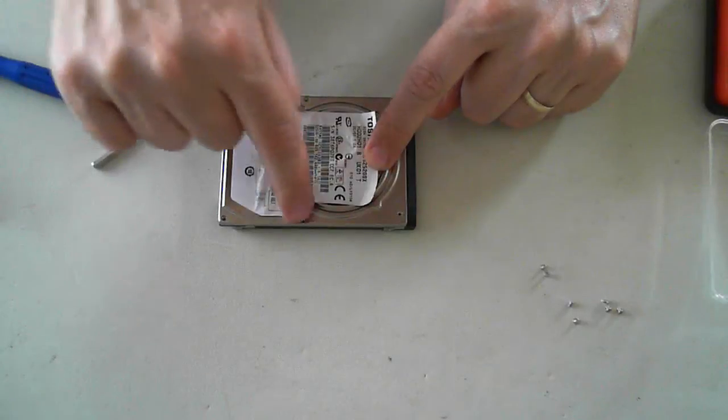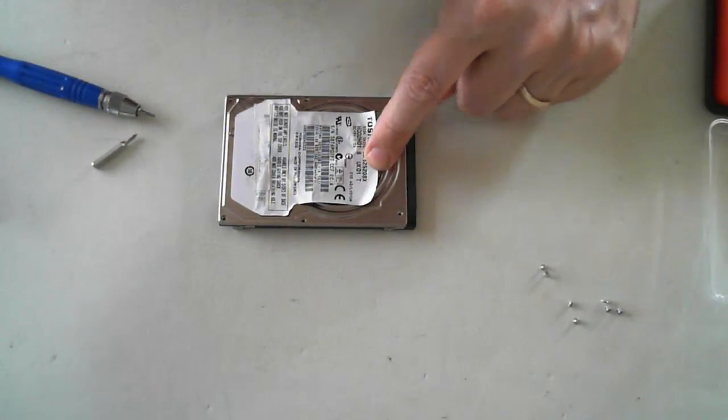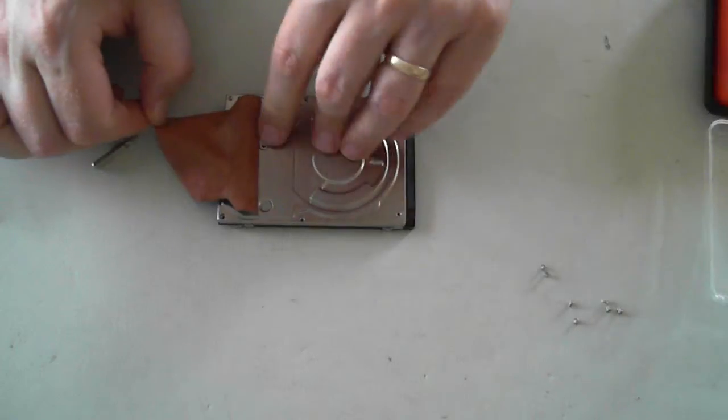There are seven screws: one, two, three, four, five, six, and there's one hidden under the label here right at the back.